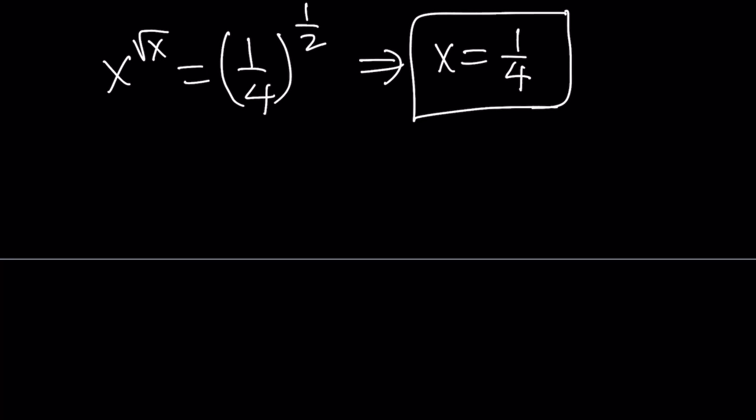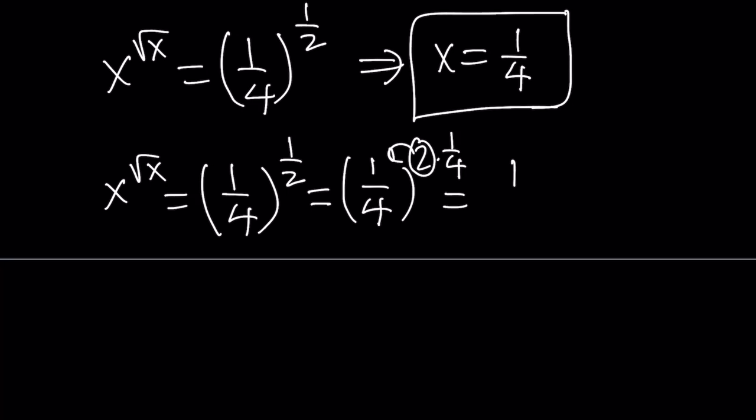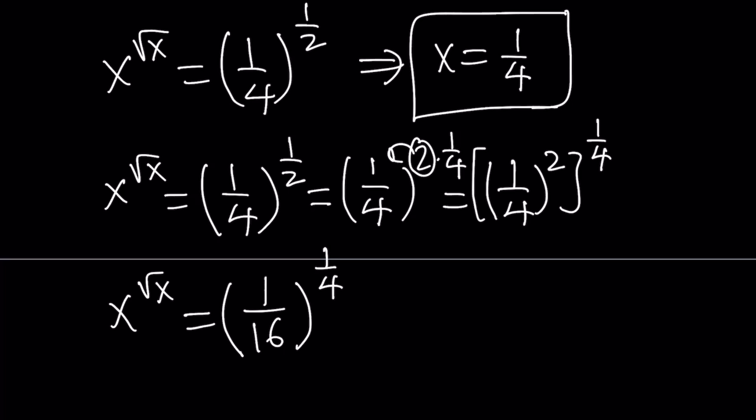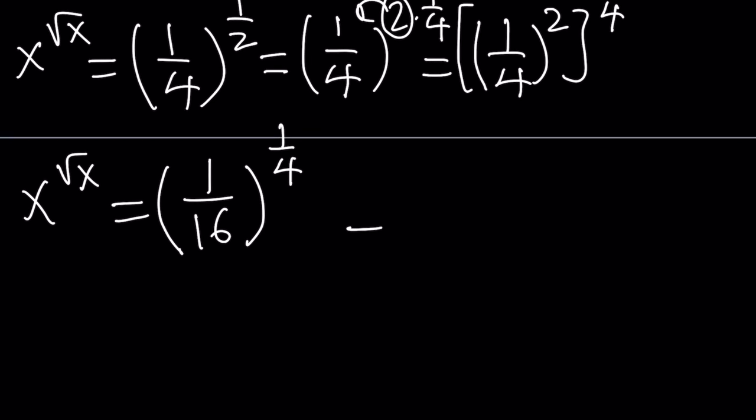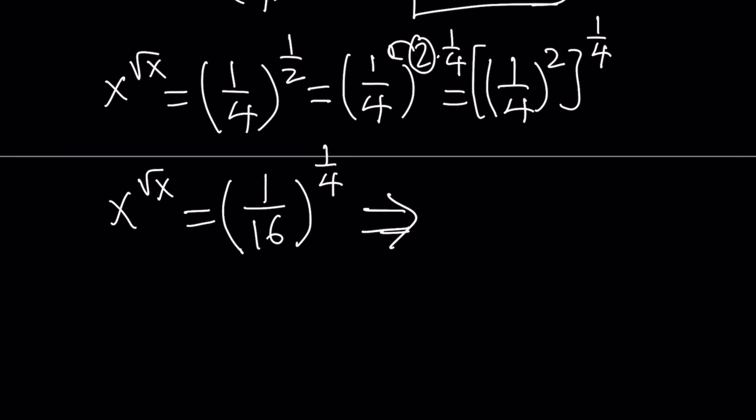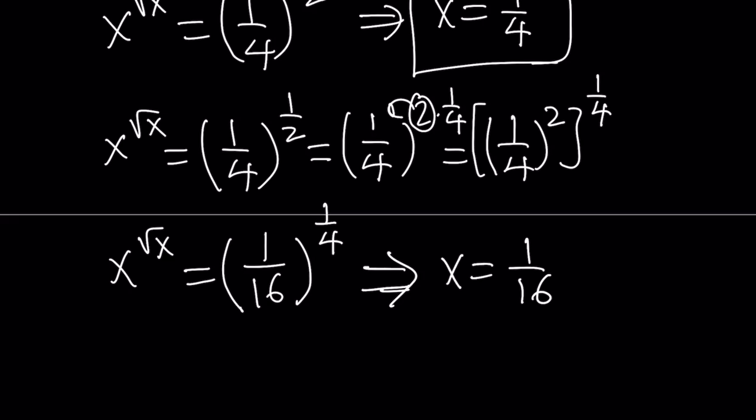Now I'm going to manipulate the one fourth. So x to the power square root of x is equal to one fourth to the power one half. I'm going to write the one half as two times one fourth and put the two inside. Hocus pocus, abracadabra. I'm going to get one fourth squared raised to the power one fourth. That gives me one sixteenth to the power one fourth. Again, I have the x in the base and the square root of x in the exponent. This implies that x can be one over sixteen.